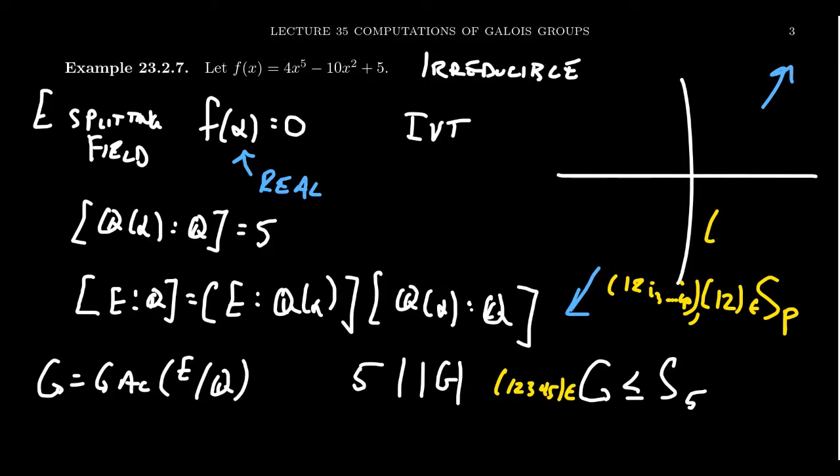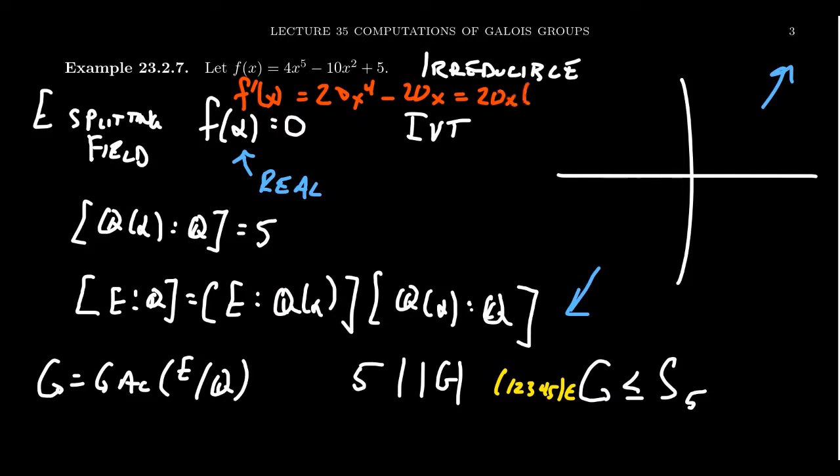What we have happening in this situation is we have a five cycle. We want to show that there's a two cycle inside the Galois group. Let's do a little bit of calculus. Looking at the derivative of f of x, you end up with 20x to the fourth minus 20x. You can factor out 20x, that leaves behind x cubed minus one, for which there's only one real solution, which is one. So our derivative is going to have two critical numbers at zero and one.